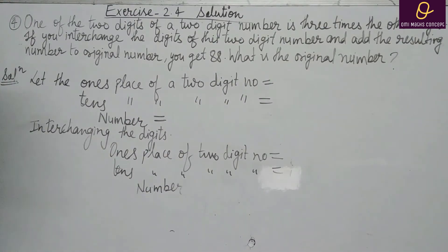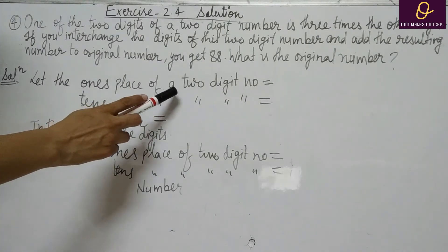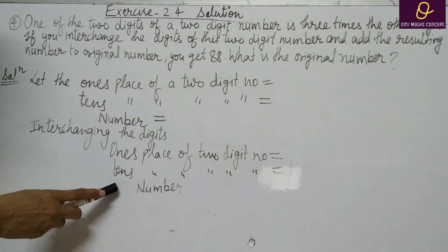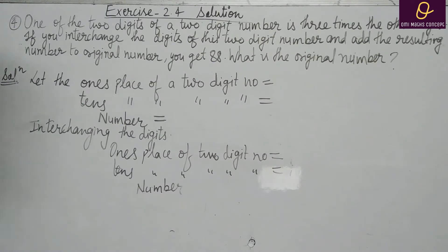Now Question number 4. One of the two digits of a two-digit number is three times the other digit. जहाँ भी two-digit number आपके पास आएगा: one's place let करोगे, फिर 10th place, फिर number form करना होता है. अगर interchanging the digit है, तो interchanging करके — यहाँ तक हर question में करना होगा. Exam में यहाँ तक करके आओ तो कुछ marks जरूर मिलेंगे.